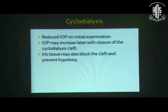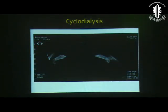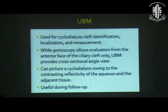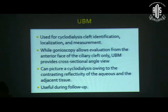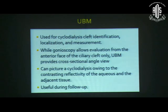IOP in these eyes may increase later when the cyclodialysis cleft closes due to inflammation. Iris tissue may also block the cleft and prevent hypotony. UBM is more diagnostic and specific for identifying cyclodialysis — a cleft is visible in the supraciliary space between the iris root and the sclera. While gonioscopy allows evaluation from the anterior face only, UBM provides a cross-sectional angle view and can image the cyclodialysis due to contrasting reflectivity of aqueous and adjacent tissue. It is also useful during follow-up and for surgical planning.